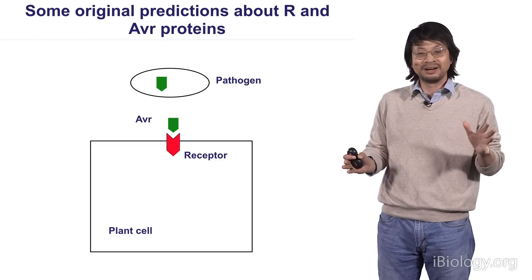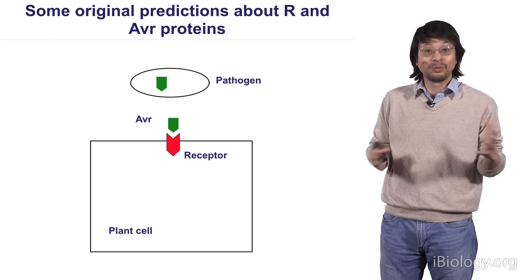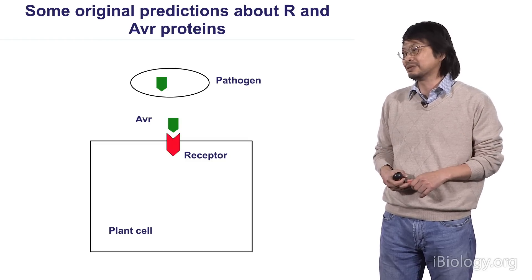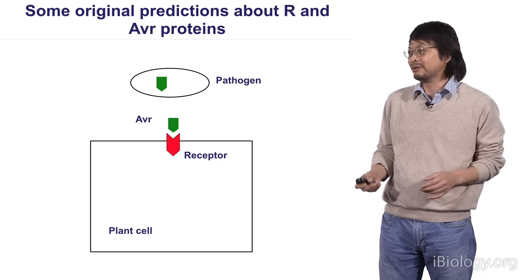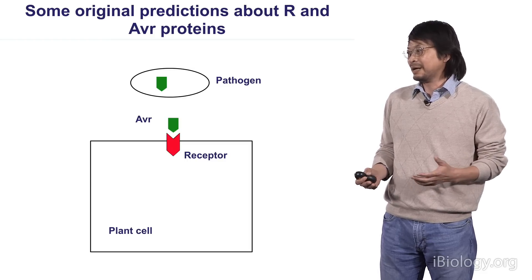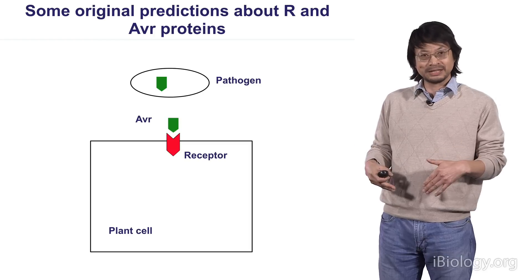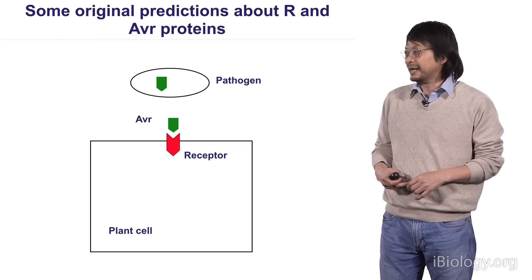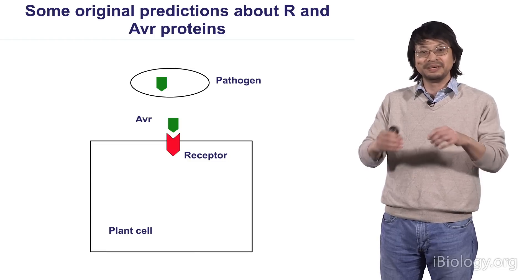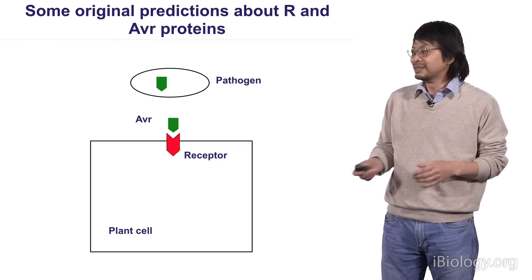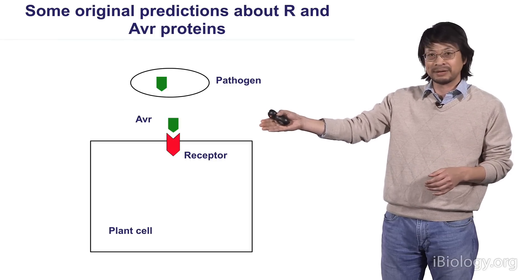There was an original prediction of how the AVR proteins and R proteins would work, really inspired by animal receptor signaling models. The idea was that this AVR protein may be made in the pathogen but secreted outside of the bacteria, and the R proteins may be receptors localized in the membrane of the plant cell - indicating a classical ligand-receptor kind of interaction.